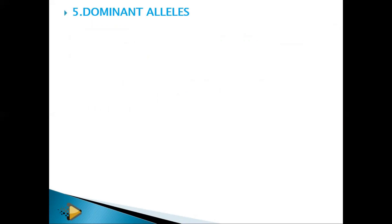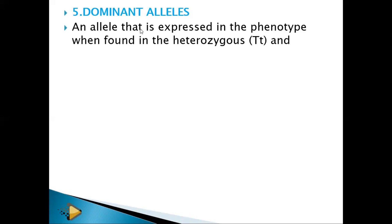Because you have two forms of alleles, one can be dominant and another recessive, or both can be dominant or both recessive. A dominant allele is one that suppresses another — it is expressed in the phenotype when found in the heterozygous state. In heterozygous state, the capital letter allele suppresses the small letter allele.